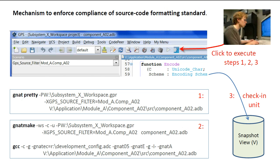We cannot assume, however, that the correct check-in procedure is always followed. Perhaps someone bypasses the mechanism in GPS and uses a version control system directly to check in a unit. Therefore, a quality assurance process is needed to ensure that every unit conforms to the mandated format. Details of the format are specified in the PrettyPrinter package of the released project file on Drive R, which is read-only.